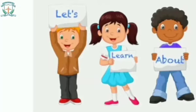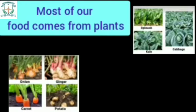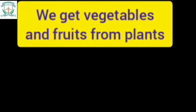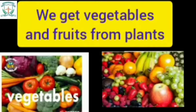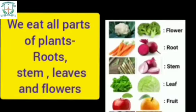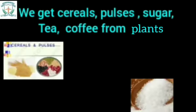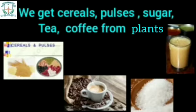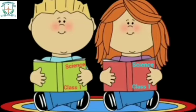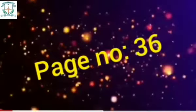Now let us summarize what we learnt in the lesson. We learnt that most of our food comes from plants. We get vegetables and fruits from plants. We eat all parts of plants — roots, stems, leaves, and flowers. We get cereals, pulses, sugar, tea, and coffee from plants. Now it's time for reading the textbook. Children, turn to page number 36.